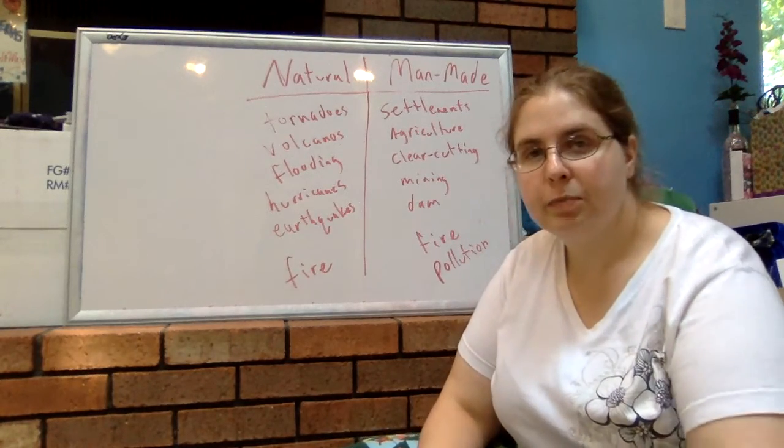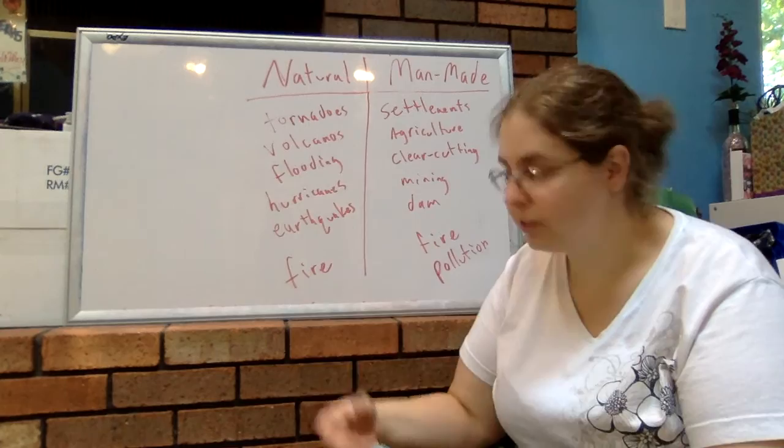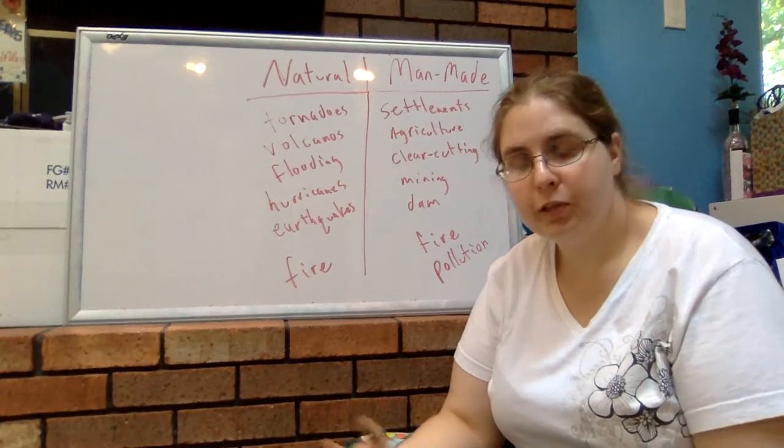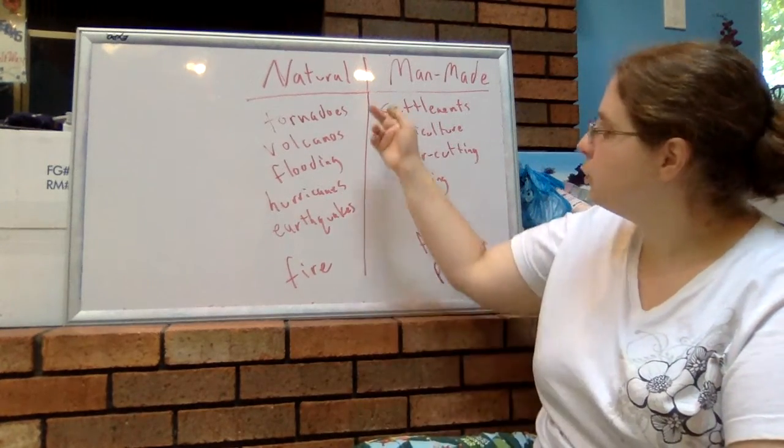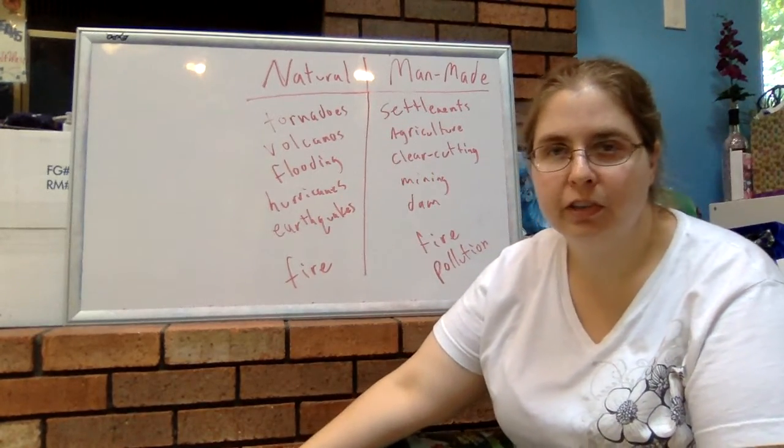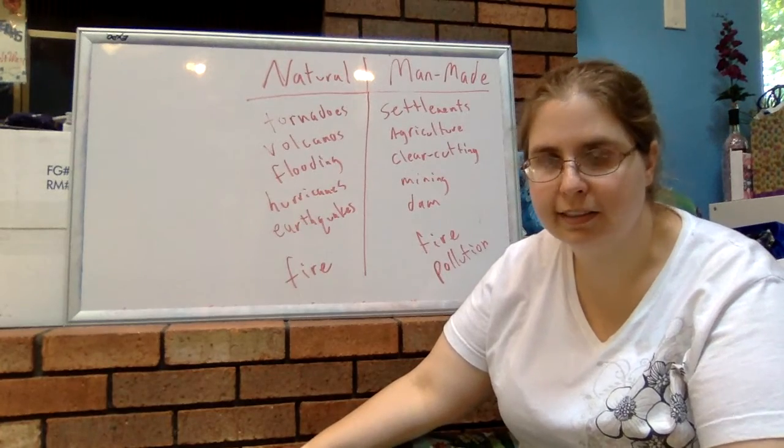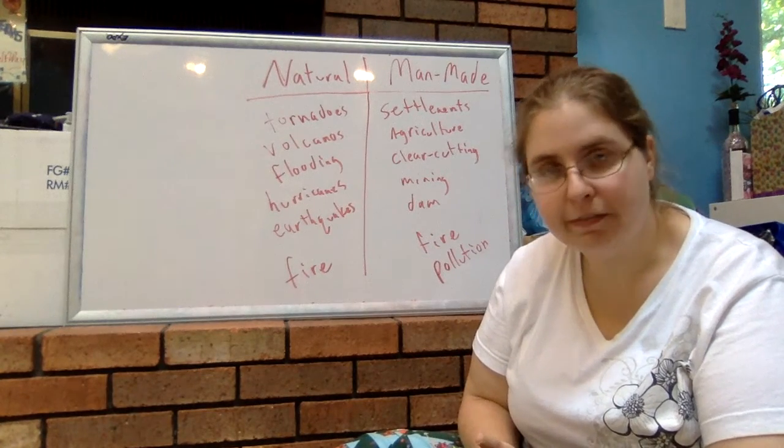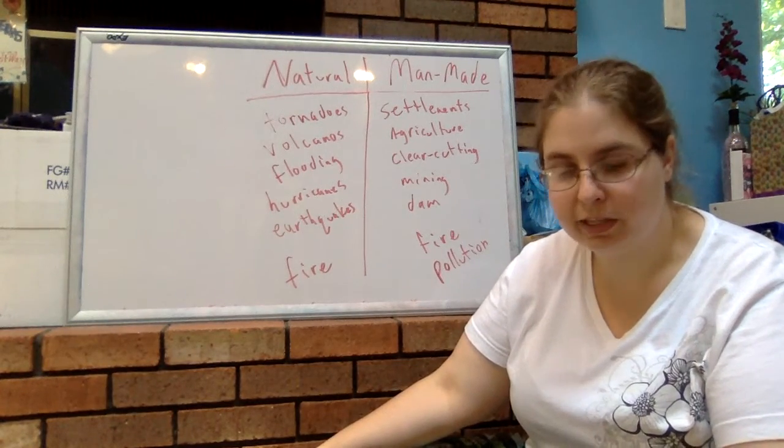The reason why these are considered disturbances is because each one will damage or destroy an existing natural ecosystem. When you clear-cut a forest, whether you're doing it to build structures like houses or stores or to clear the land for agriculture, you're destroying that ecosystem. Even if there wasn't a forest there initially, even if it was a field or a grassland, you're still disrupting it by getting rid of the natural plants that live there and changing the soil or tilling it, which will disturb the organisms that live in the soil.